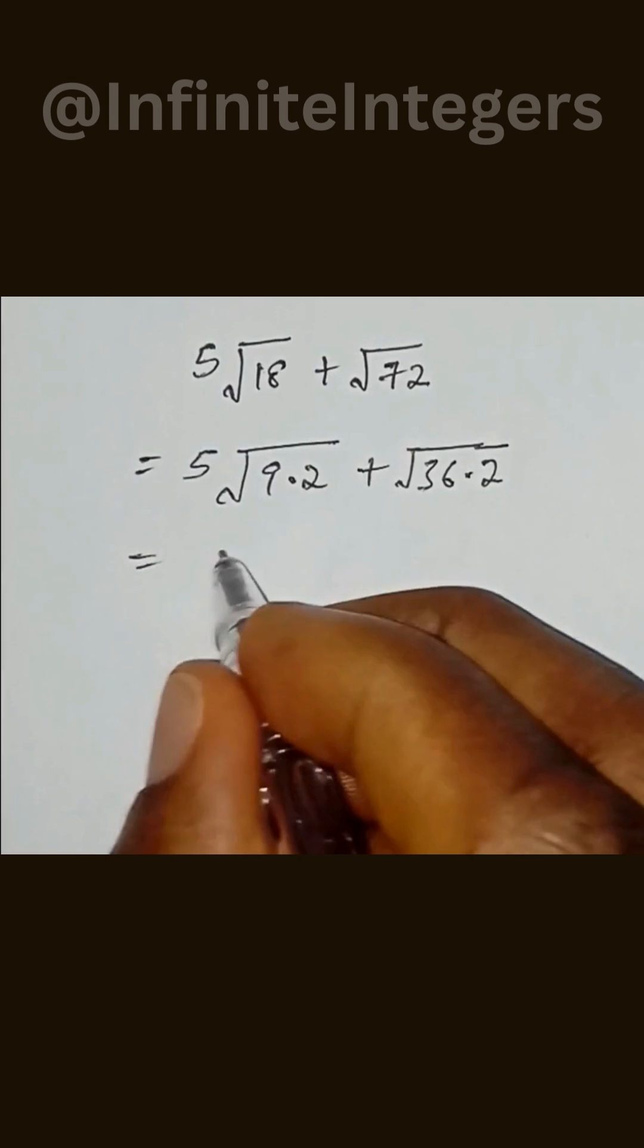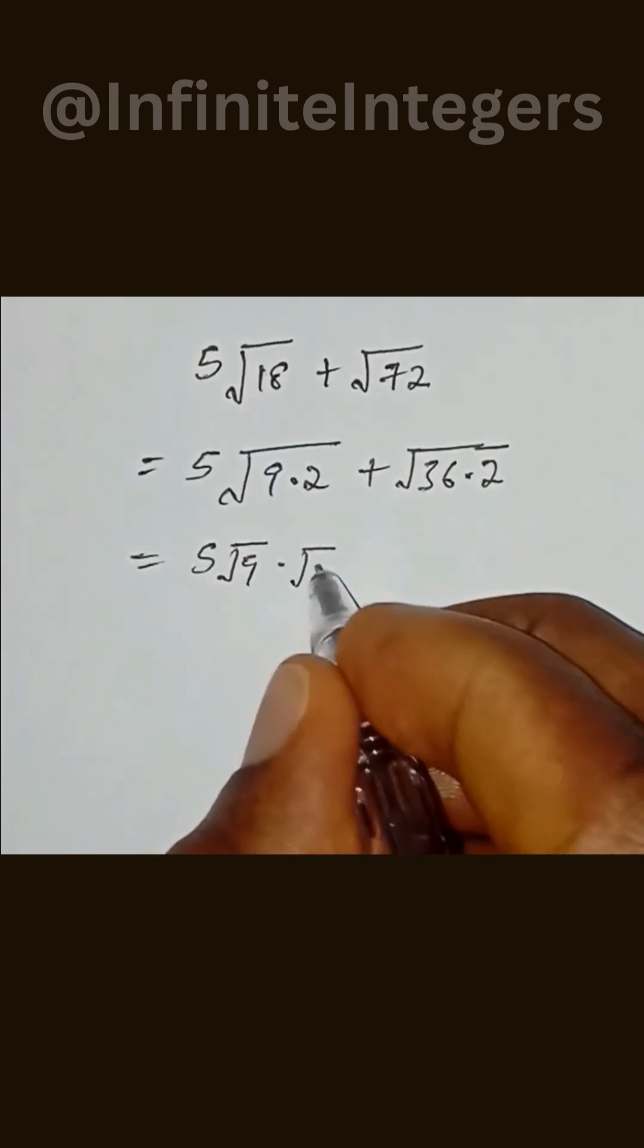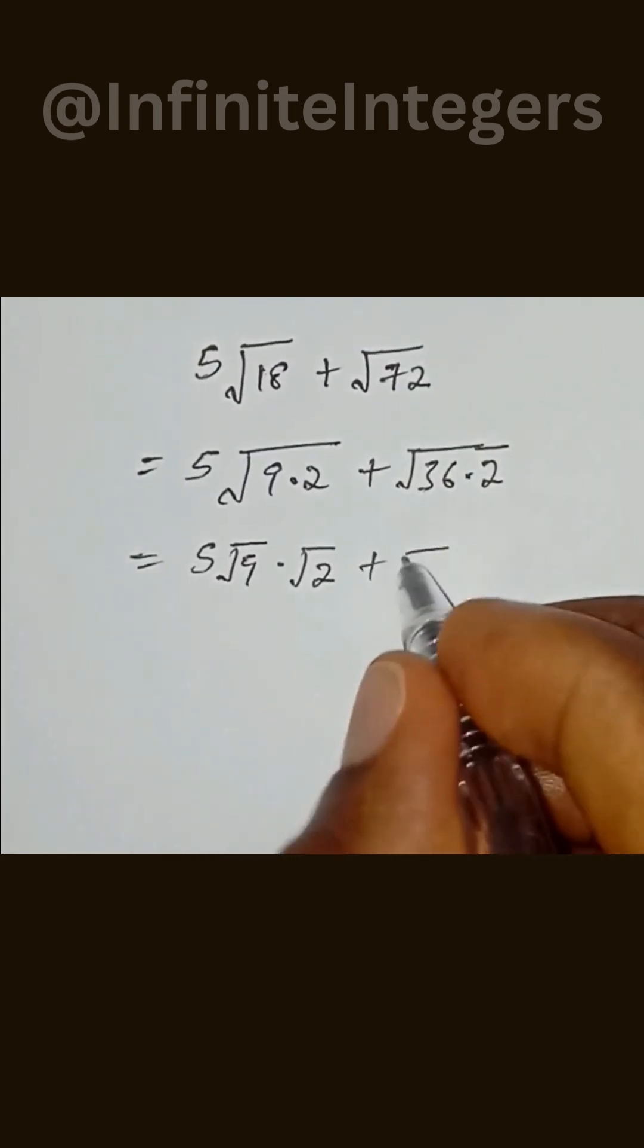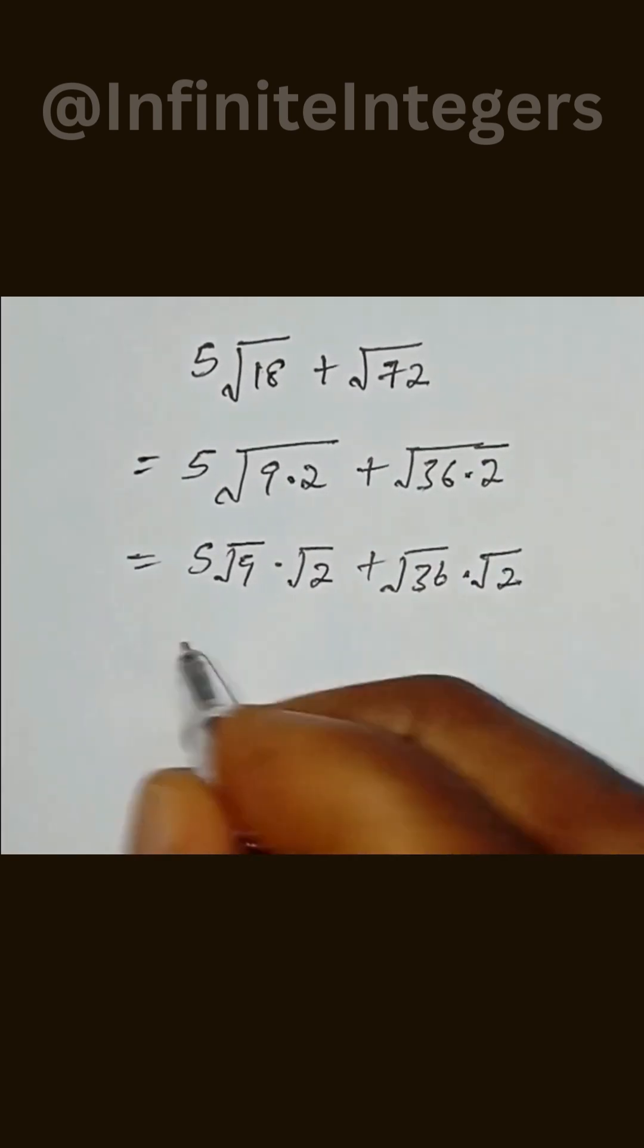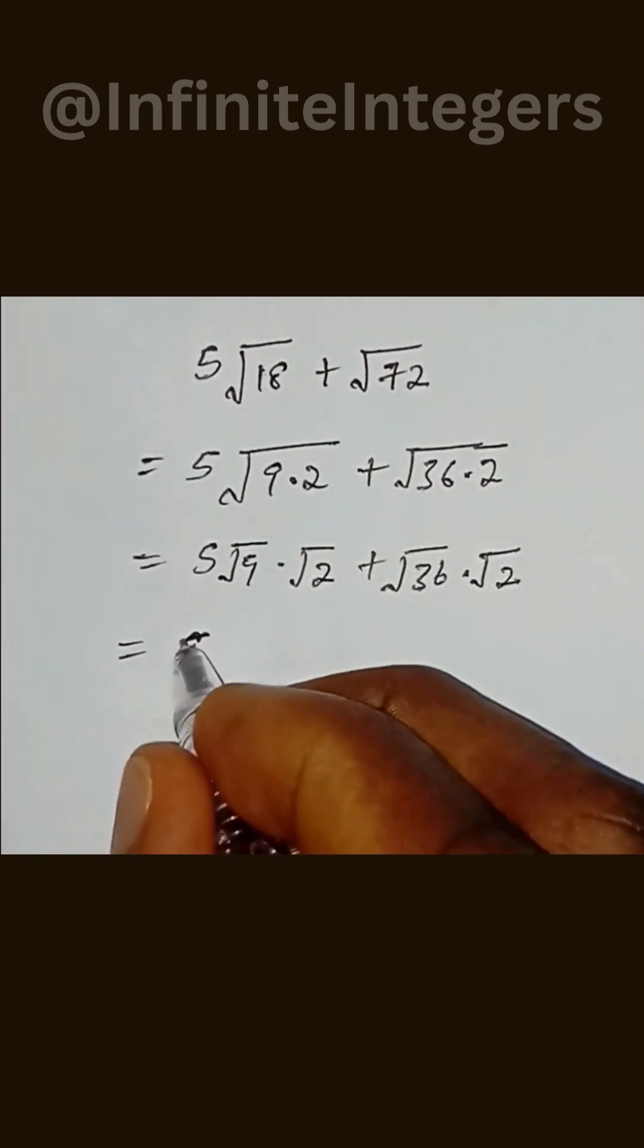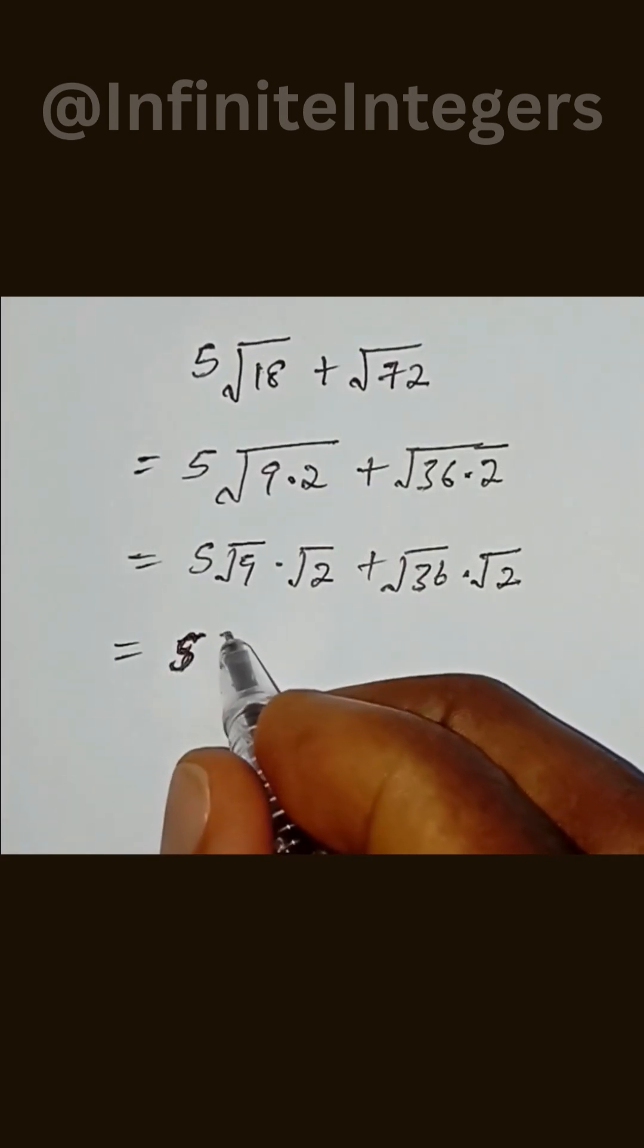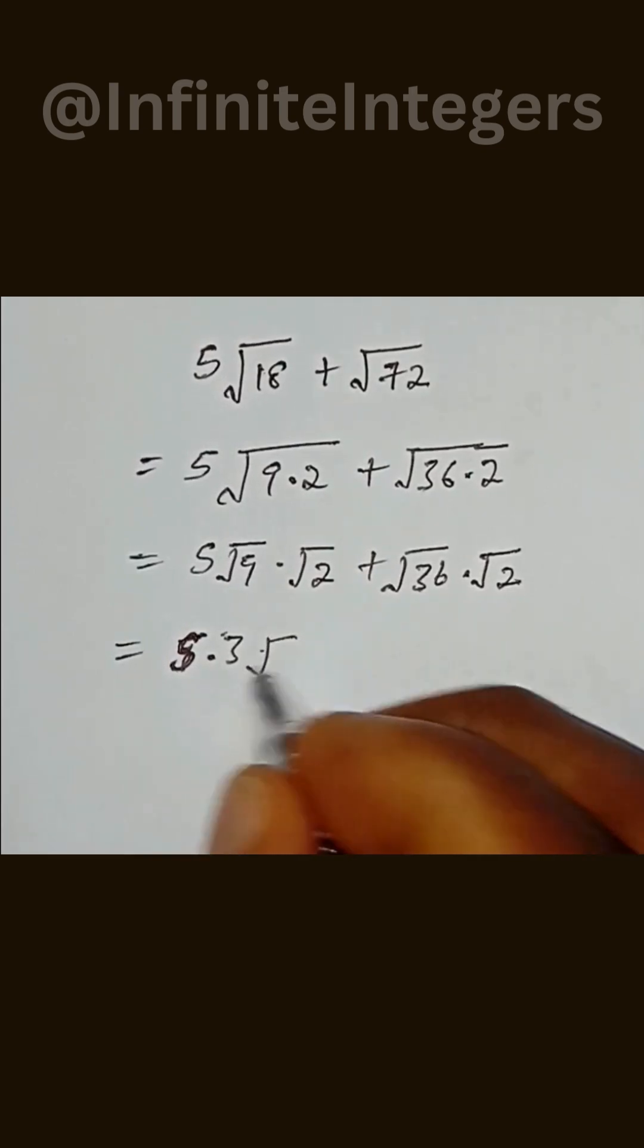Then this is equal to 5 square root 9 multiplied by square root 2 plus square root 36 multiplied by square root 2. And this is equal to 5, square root 9 equals 3, then square root 2.